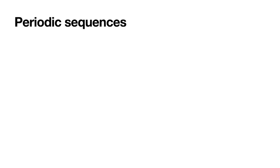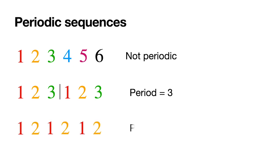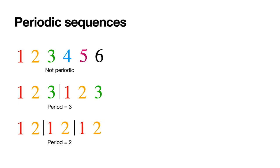In this video I'll show you how to use the DFT to determine if a sequence is periodic and what its period is. A periodic sequence is one that repeats itself. Here's an example of a non-periodic sequence: 1, 2, 3, 4, 5, 6 — it doesn't repeat itself. However, 1, 2, 3, 1, 2, 3 is periodic with period 3 because each block that repeats is of length 3. And 1, 2, 1, 2, 1, 2 is periodic with period 2. You could say the first sequence is periodic with period 6, but we'll just say it's not periodic — or that the period equals the length of the sequence.